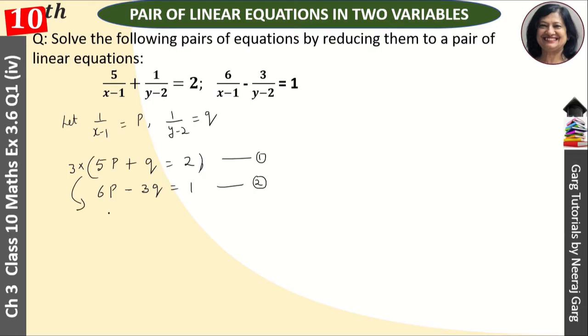After multiplying, the equation becomes 15p plus 3q that is equal to 6. Now here is minus and here is plus, so we will add them. We won't change the sign.